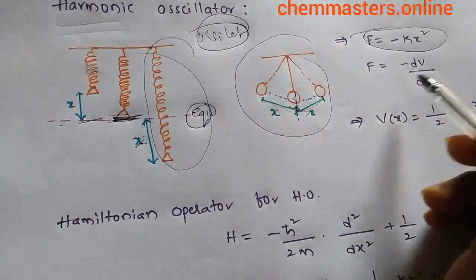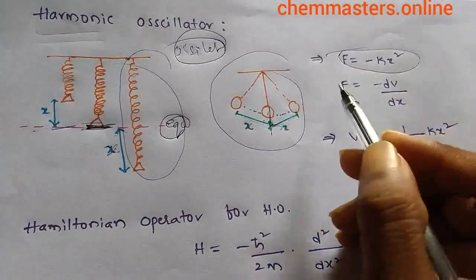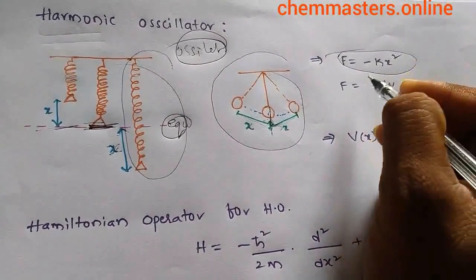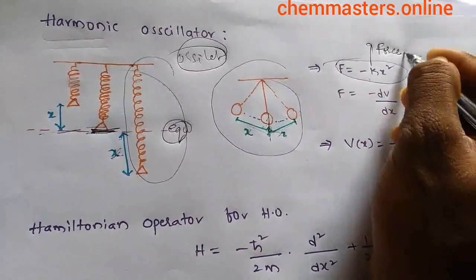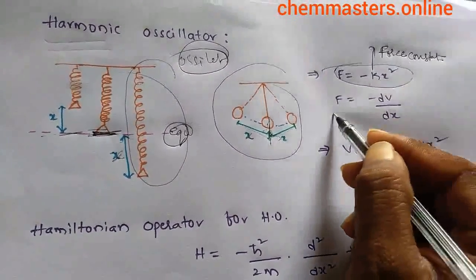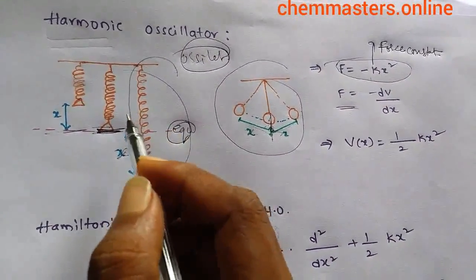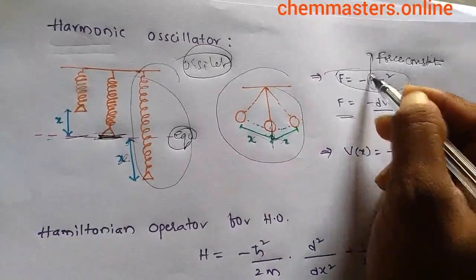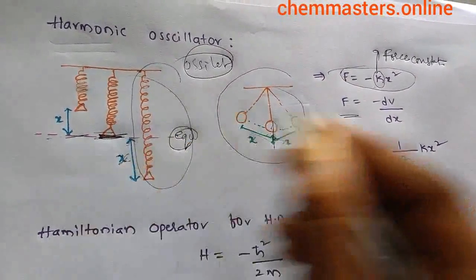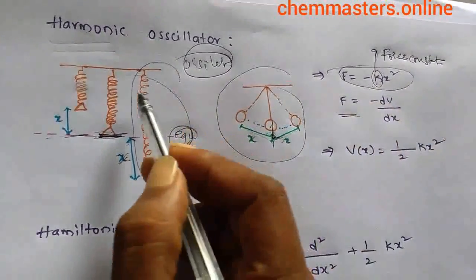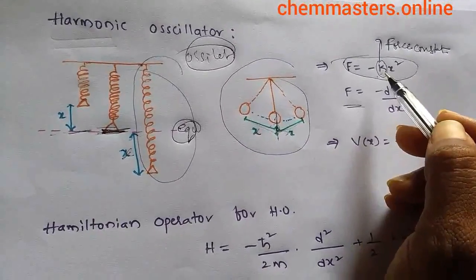This is given by Hooke's Law: F = −kx². Here, k represents the force constant. A stiff spring has a large force constant, while a weak spring has a smaller force constant.